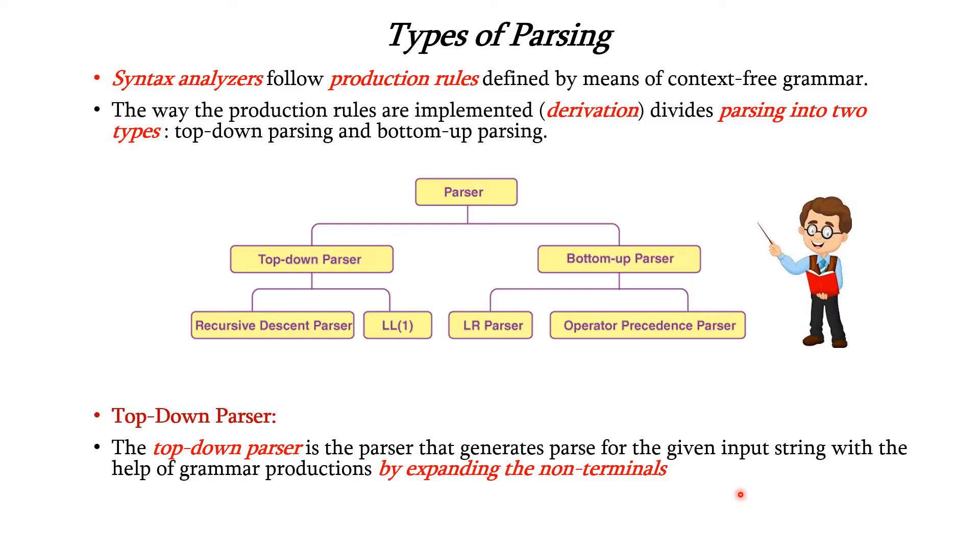Top-down parser is the parser that generates the parse for the given input string with the help of grammar productions by expanding the non-terminals. That is, it will start from the start symbol and then end on the terminals. It uses the left-most derivation.